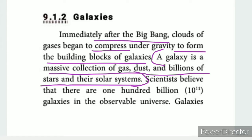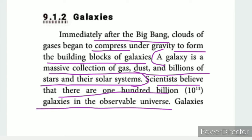A galaxy is made up of gas, dust, stars, and solar systems. Scientists believe that there are 100 billion galaxies in the observable universe.